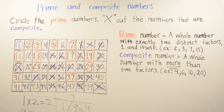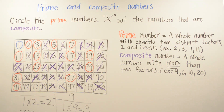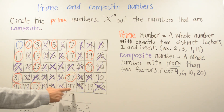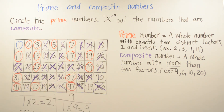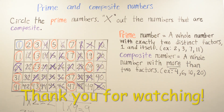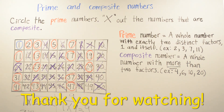Then we go to 41 — 41 is going to be a prime number. Next is 43, and 43 is also going to be a prime number. We already did 44, 45, and 46, so the next one is 47. And 47 is going to be a prime number. Our last number is 49, and 49 is going to be a composite number.